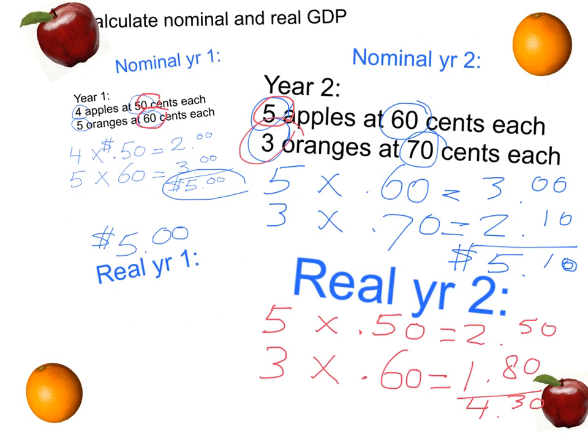So now we've calculated nominal GDP in year one. That was $5. Real GDP in year one was the same. Also $5 because we used year one prices. Nominal GDP in year two was $5.10. And real GDP in year two went down to $4.30.